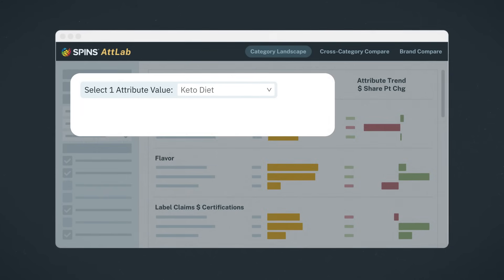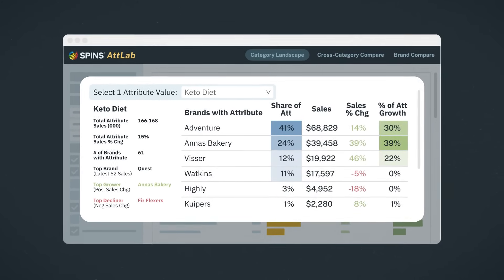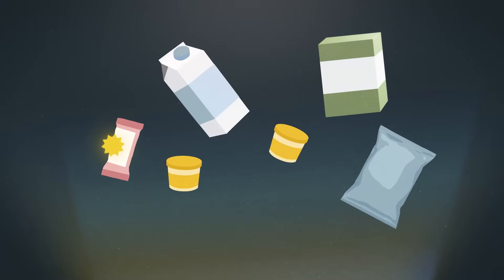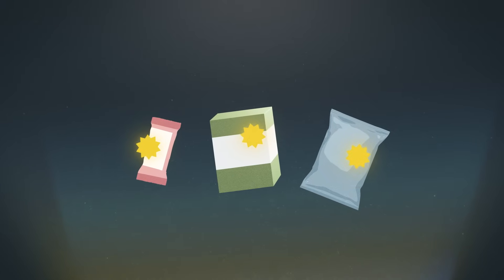Beat your competition by deeply understanding category size, growth, and share. And select your best product concepts from in and outside your category for your innovation pipeline.